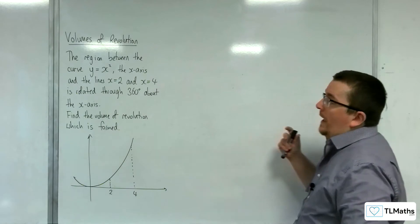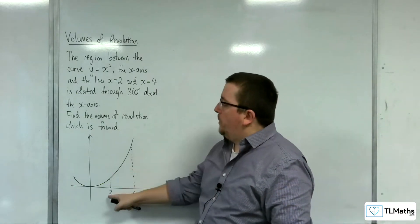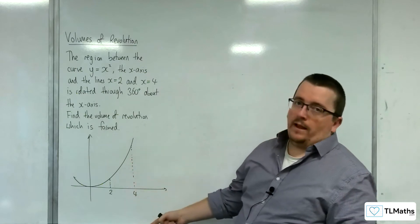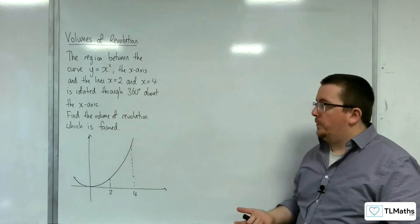In this video, we're going to be looking at rotating the region of y equals x squared between 2 and 4 about the x-axis, and then calculating the volume of revolution that's formed from doing that.